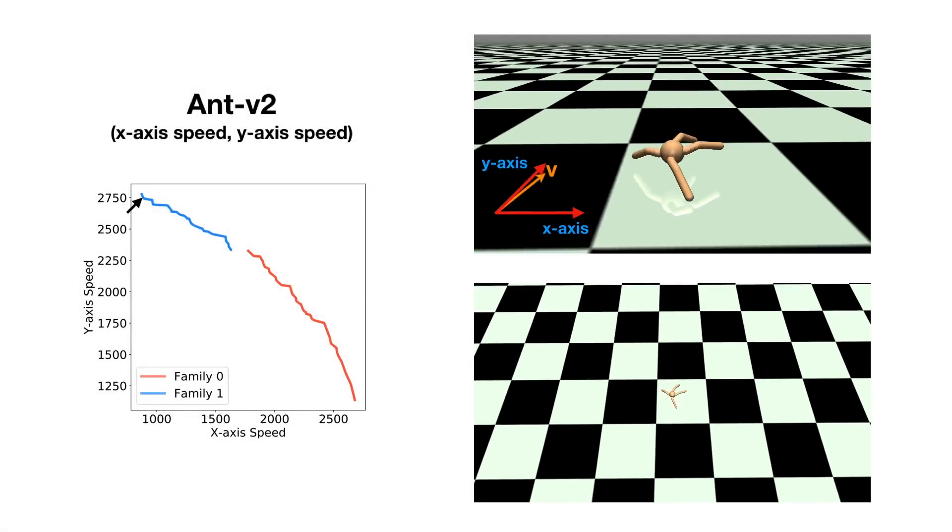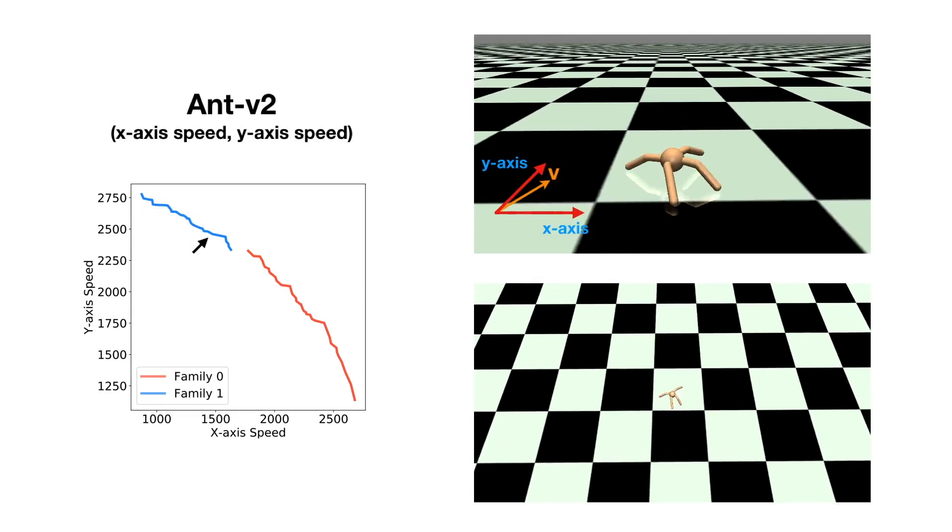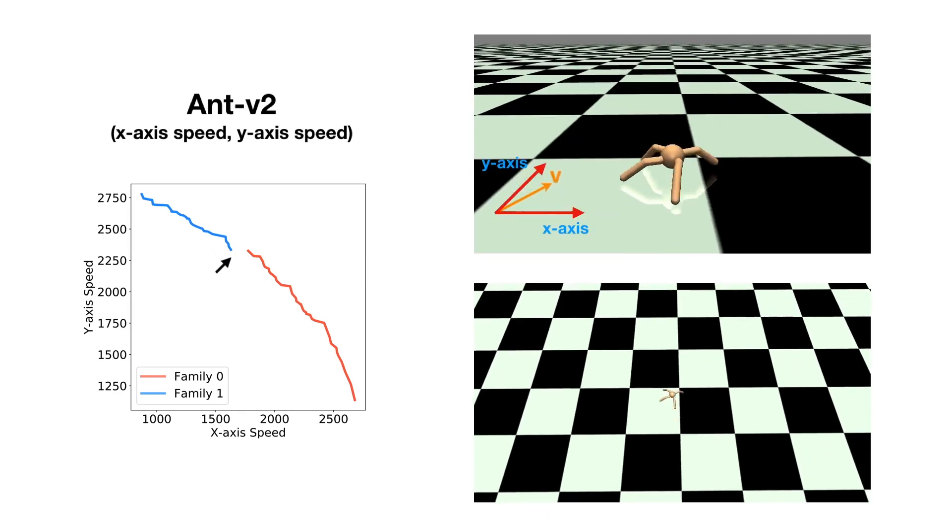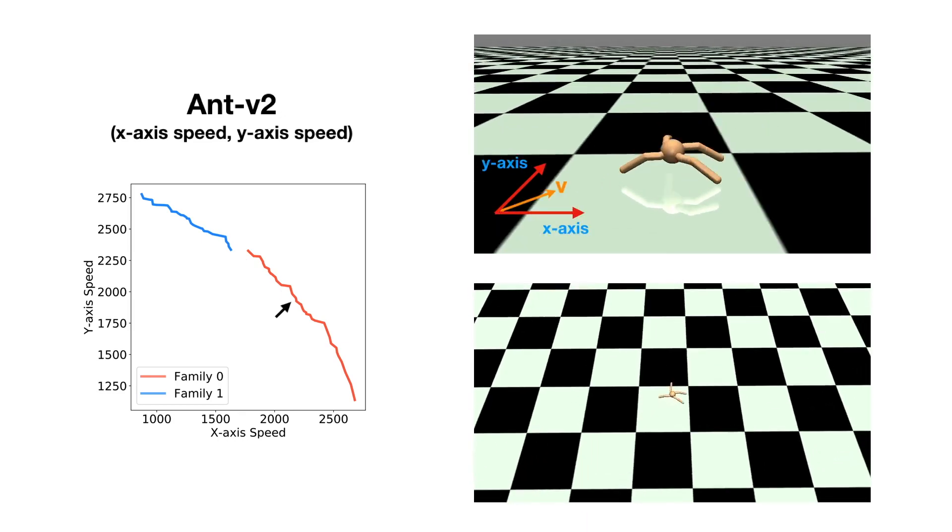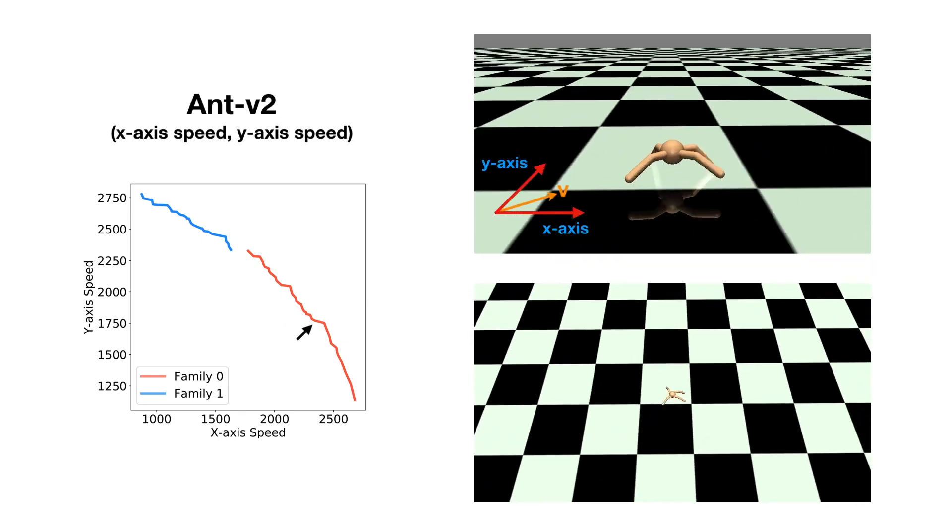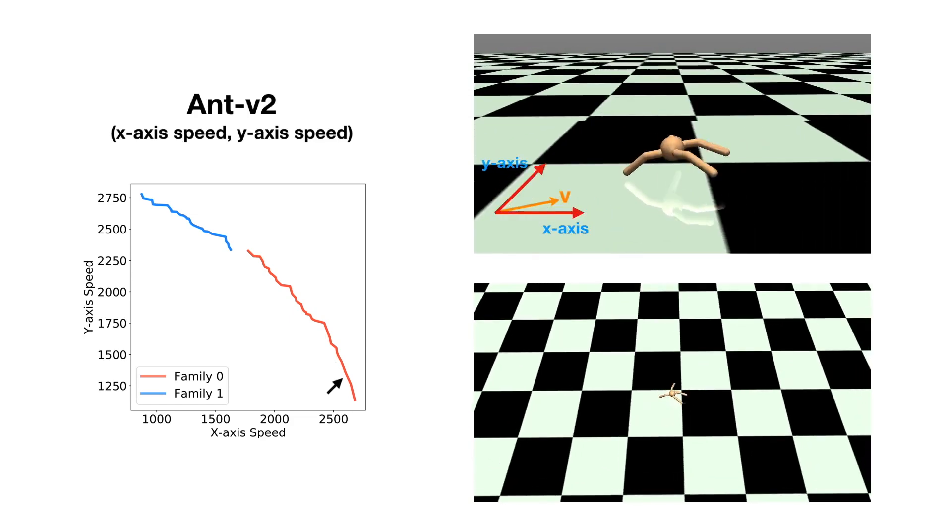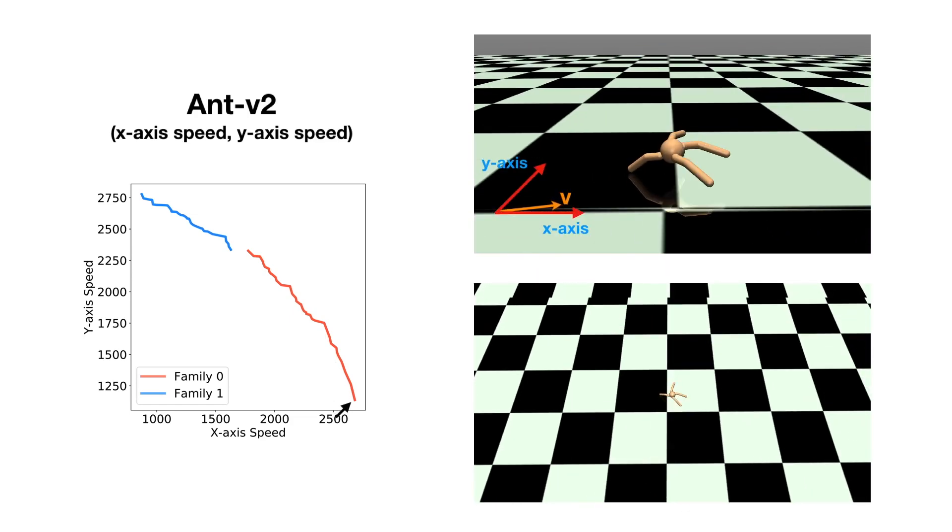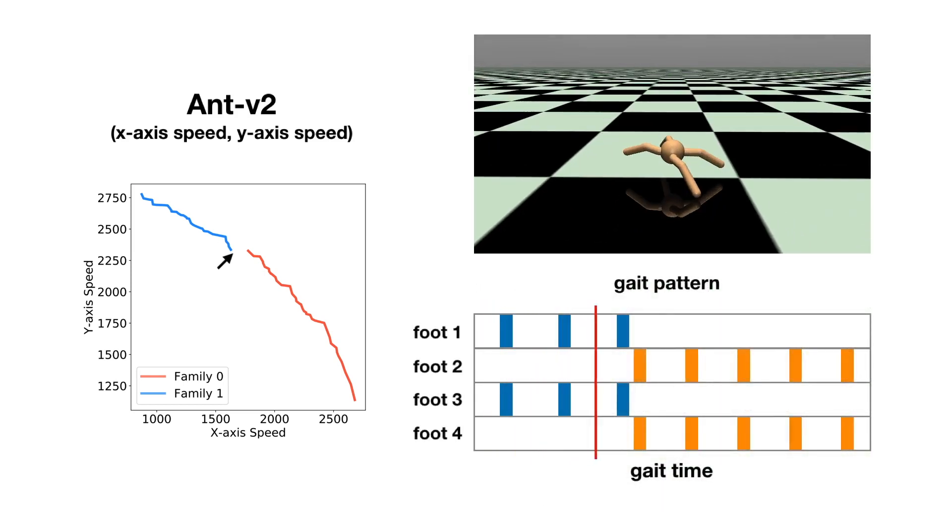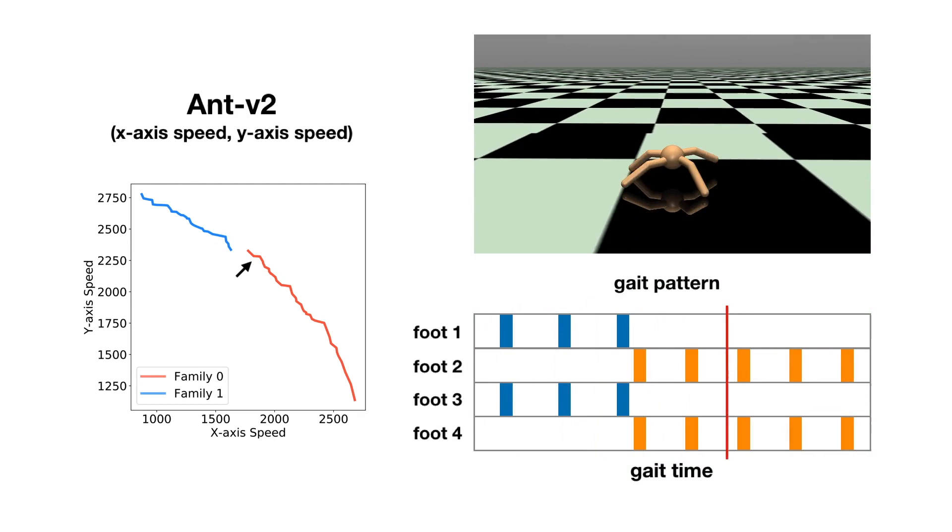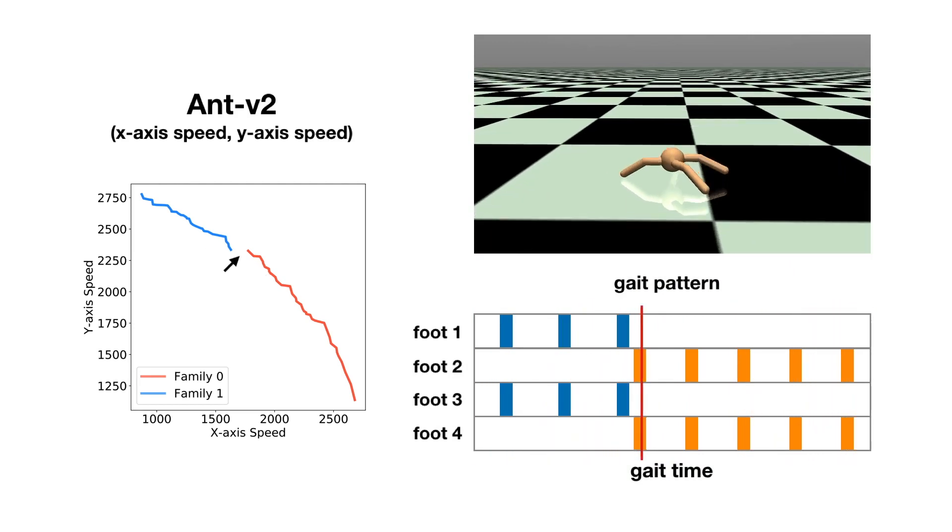In this example, we change the policy for the ant, smoothly varying from moving in the y direction to moving in the x direction. As we can see, the ant switches its walking gait when moving from the first policy family to the second family in order to maximize performance.